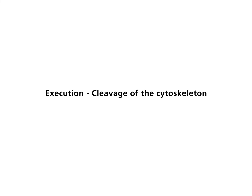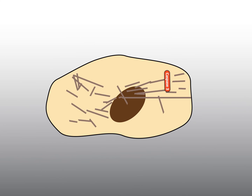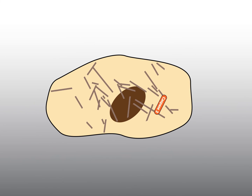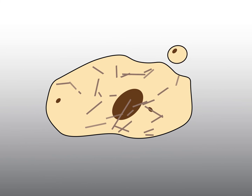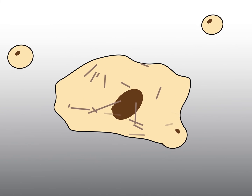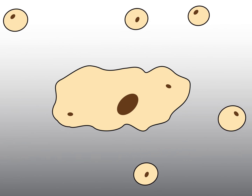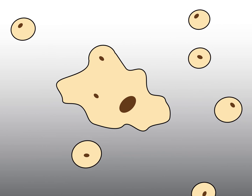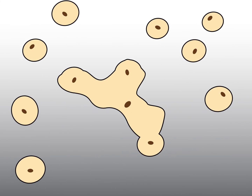Execution - Cleavage of the cytoskeleton: Caspase 3 cleaves many other proteins, such as proteins of the cytoskeleton. Hereby, the cell loses its structure. Next, other proteins cause the cell to collapse into vesicles, the so-called apoptotic blebs. Most blebs contain mitochondria and also portions of the nucleus including DNA. These components allow energy to be maintained and new proteins synthesized. The rapid break-up of the cell and of the formed vesicles is thus avoided, preventing an inflammatory reaction in the surrounding tissue.